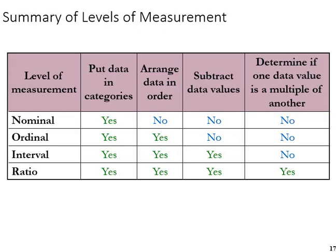And finally, this table summarizes the four levels of measurement by their characteristics. All of them can be put in categories, the data that is. From ordinal on up, the data can be arranged in a particular order, and from interval up, we can subtract data values, something we can't do with ordinal or nominal. And finally, ratio, we can determine if one data value is a multiple of another. We can't do that with interval.